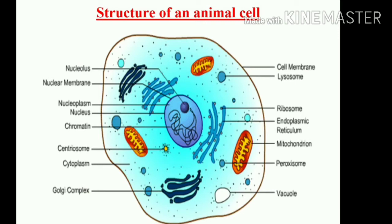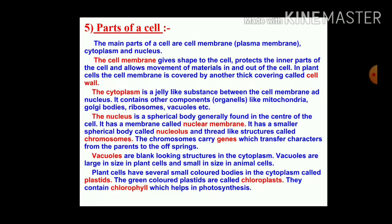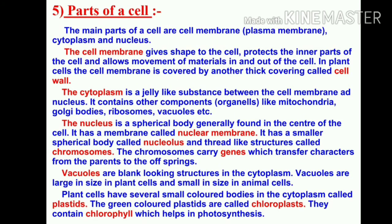Now in detail we will see the parts of the cell. The main parts of the cell are: cell membrane (or plasma membrane), cytoplasm, and nucleus. The cell membrane gives shape to the cell, protects the inner part of the cell, and allows movement of material in and out of the cell. In plant cell, the cell membrane is covered by another thick covering called a cell wall. The cytoplasm is a jelly-like substance between the cell membrane and nucleus, and it contains organelles like mitochondria, Golgi bodies, and ribosomes, as well as vacuoles.